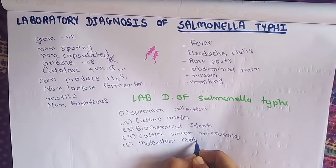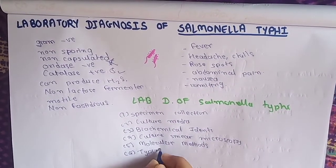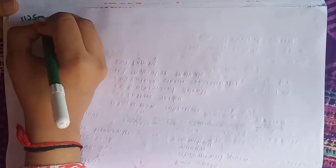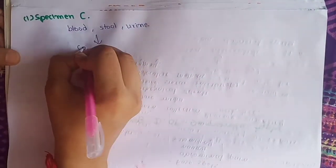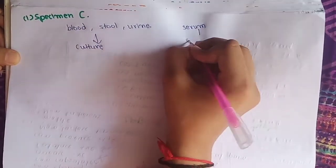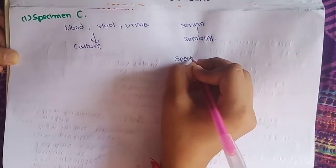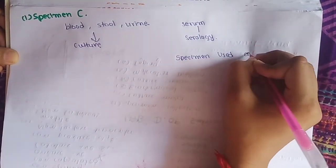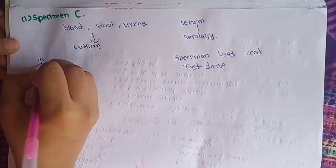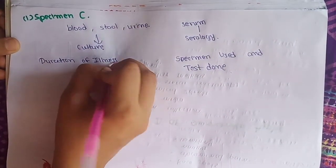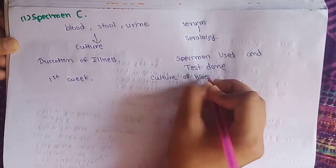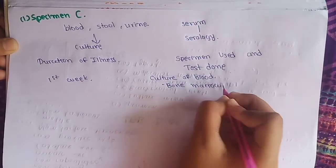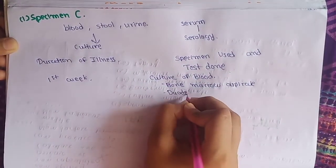Starting with specimen collection: the mainly used specimens are blood, stool, and urine, collected for culture media examination, while serum is collected for serological examination. The specimen used and test done depends on the duration of illness. In the first week of illness, we perform blood culture examination and may also take bone marrow aspirate and duodenal aspirate.